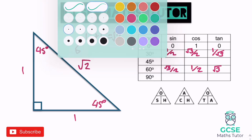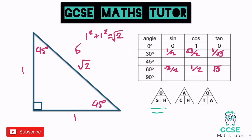For sin 45, it's opposite over hypotenuse. Opposite the 45 is 1 and the hypotenuse is root 2, so sin 45 is 1 over root 2. For cos 45, it's adjacent over hypotenuse. The adjacent is also 1 and the hypotenuse is root 2, so cos 45 is also 1 over root 2. For tan 45, it's opposite over adjacent — that's 1 over 1, which is just 1.